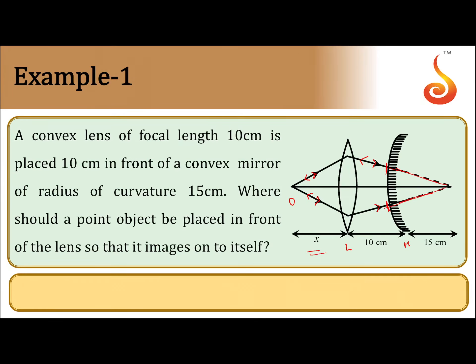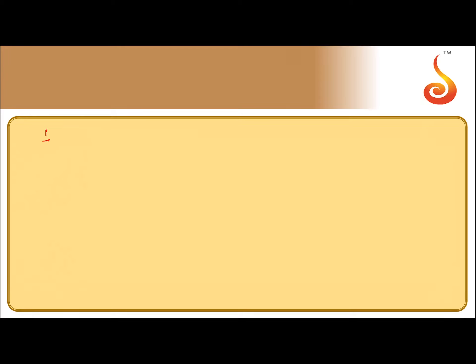The 10 centimeters plus 15 centimeters together act as the image distance for the convex lens, and x is basically the object distance. From the convex lens equation: 1/f = 1/v − 1/u.